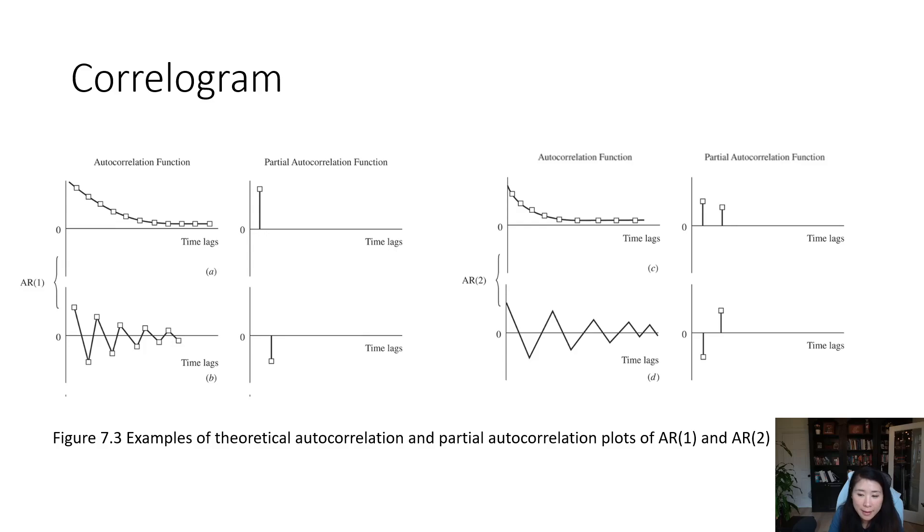In the previous video we looked at the MA model where the PACF diagram slowly decreases or alternates up and down. But if we are looking at time series data that needs an AR term to capture the pattern, we will see that our PACF diagram will have a spike. As you can see on the left hand side diagram, this time series will use AR term 1. The reason is AR1 without MA, because the ACF diagram doesn't have any spike. For the PACF diagram we see one spike, so we will consider using the AR1 model to capture the time series pattern.